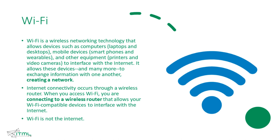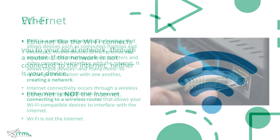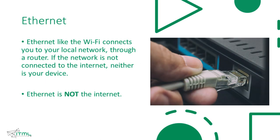In order to use the internet via Wi-Fi, you need a wireless router to connect. Ethernet connects you to your local network through a router via a cable. If the network is not connected to the internet, neither is your device.